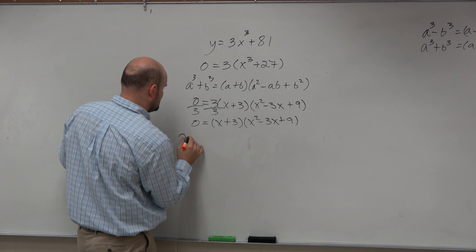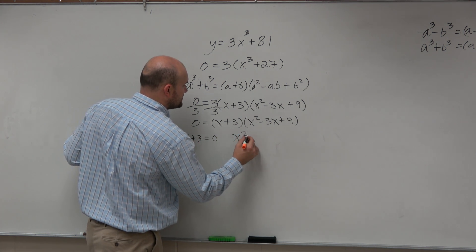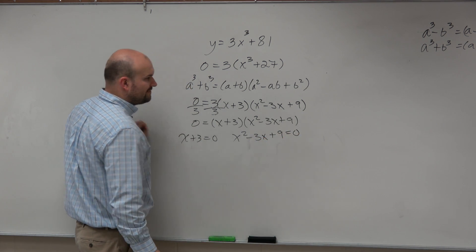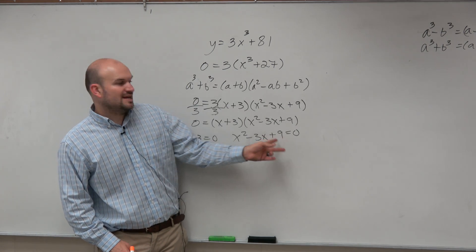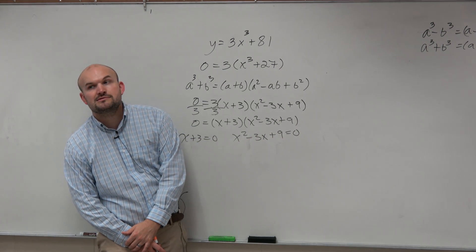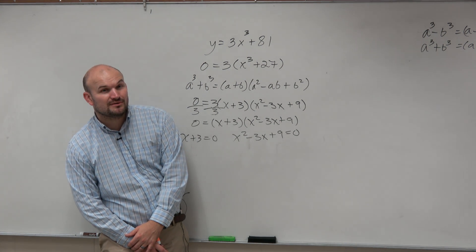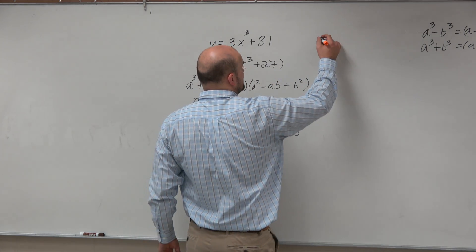Now if we set these both equal to zero, in the first example, or one of the examples we did, this was factorable. But we have a problem here. Because when we try to factor this, what two numbers multiply to give you 9, add to give you a negative 3? Nothing. You have an issue. It's not factorable. Quadratic formula.